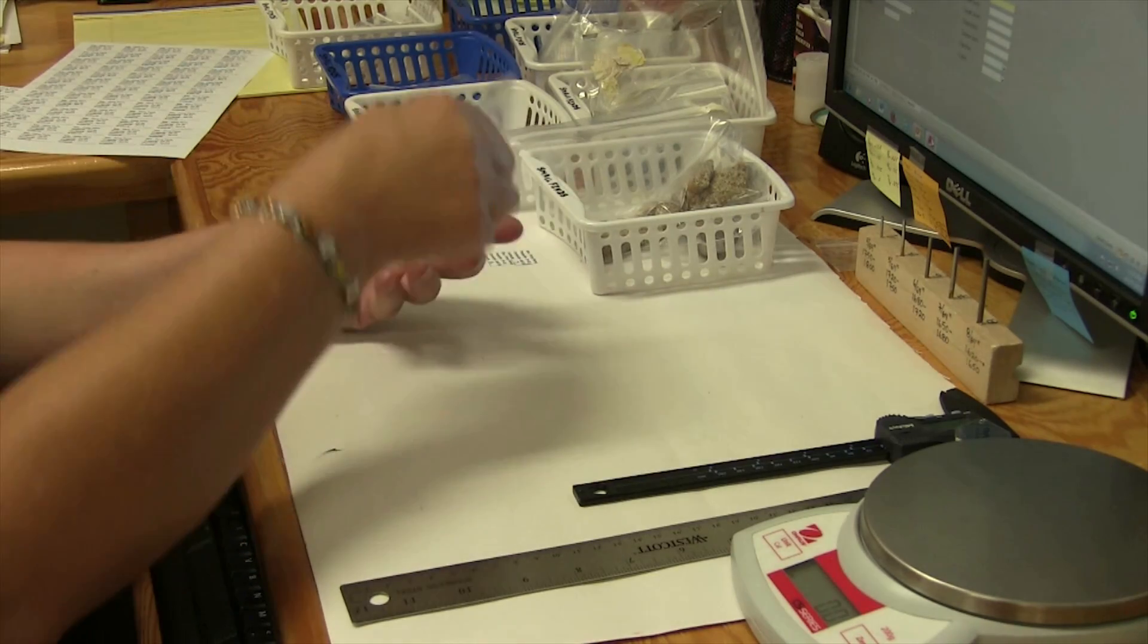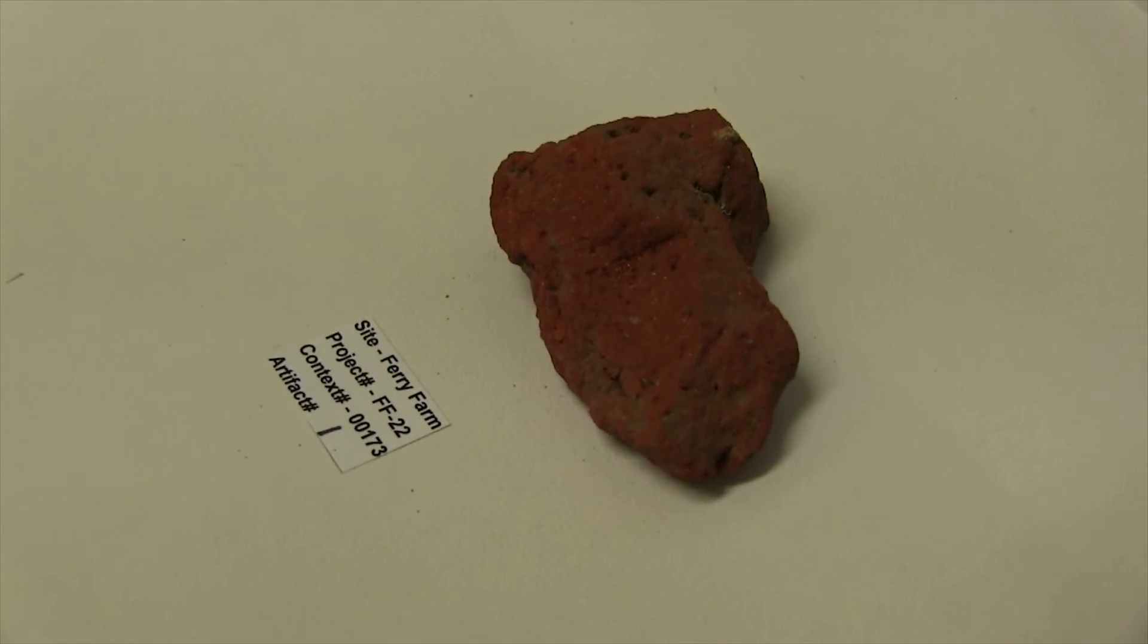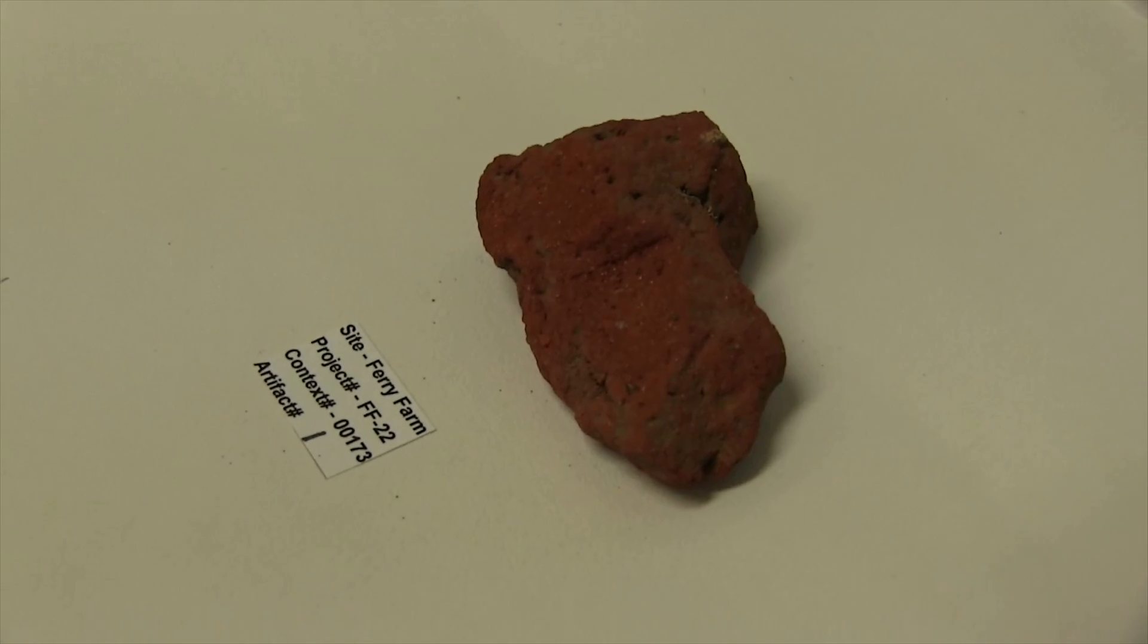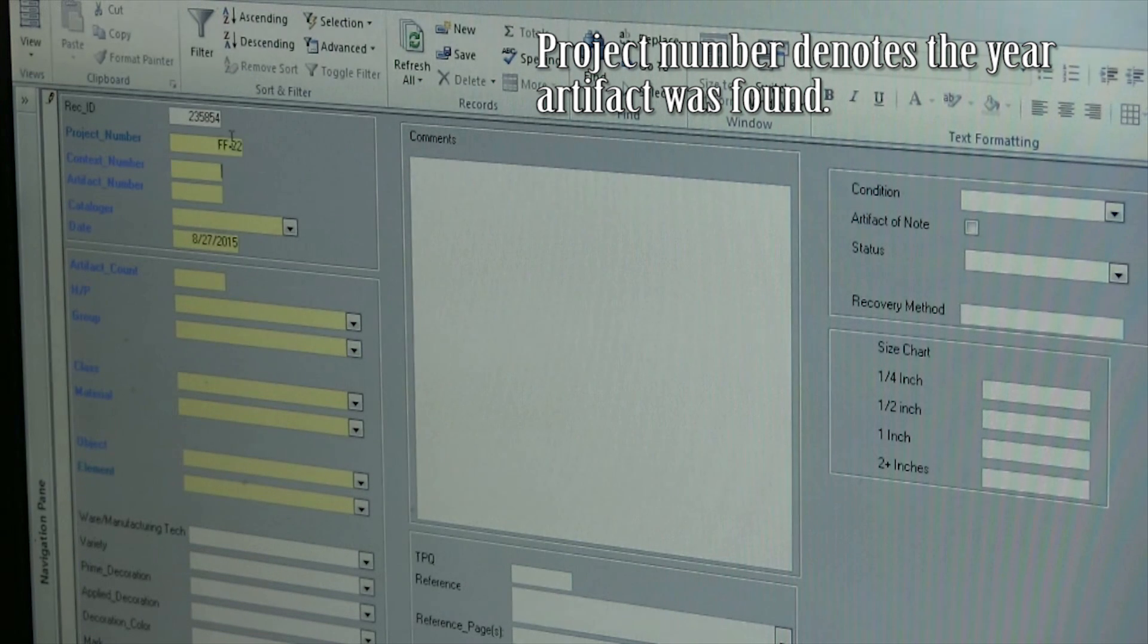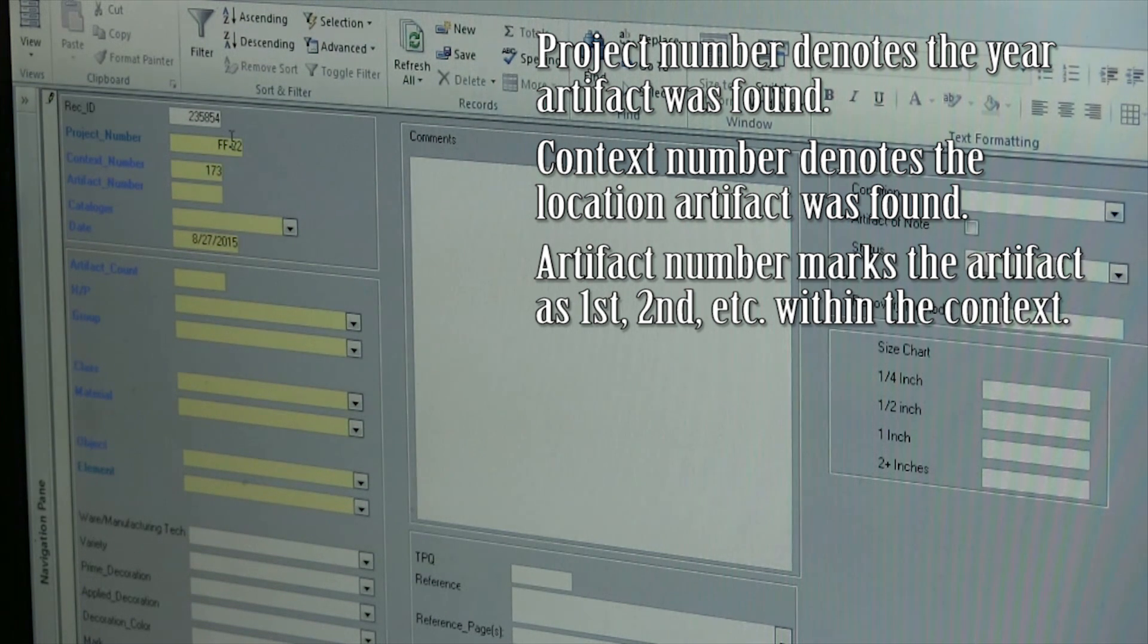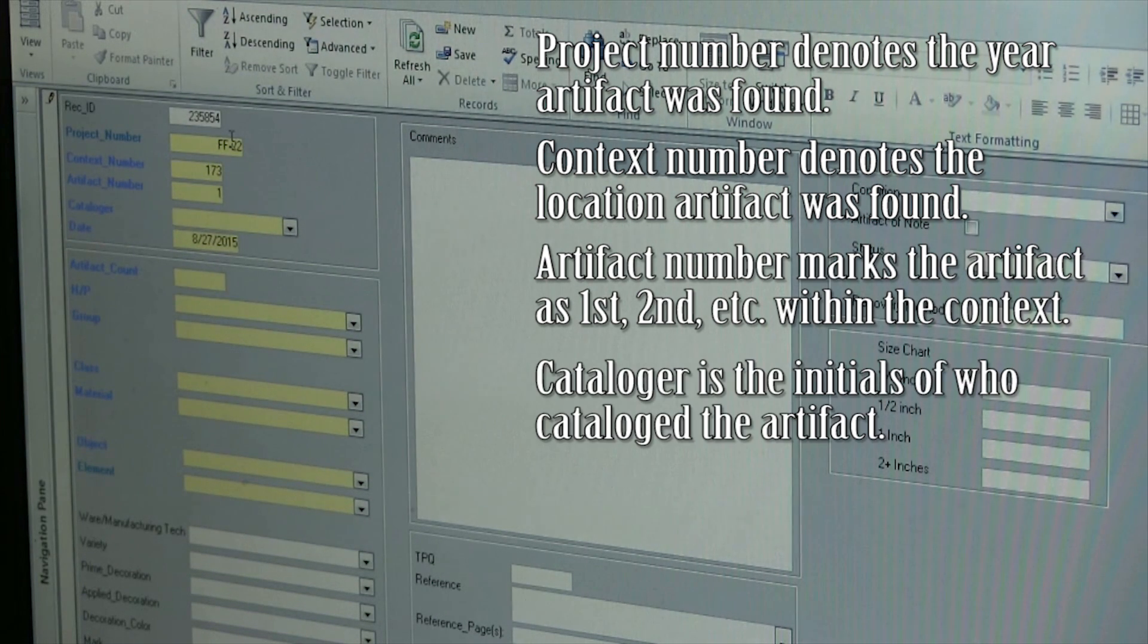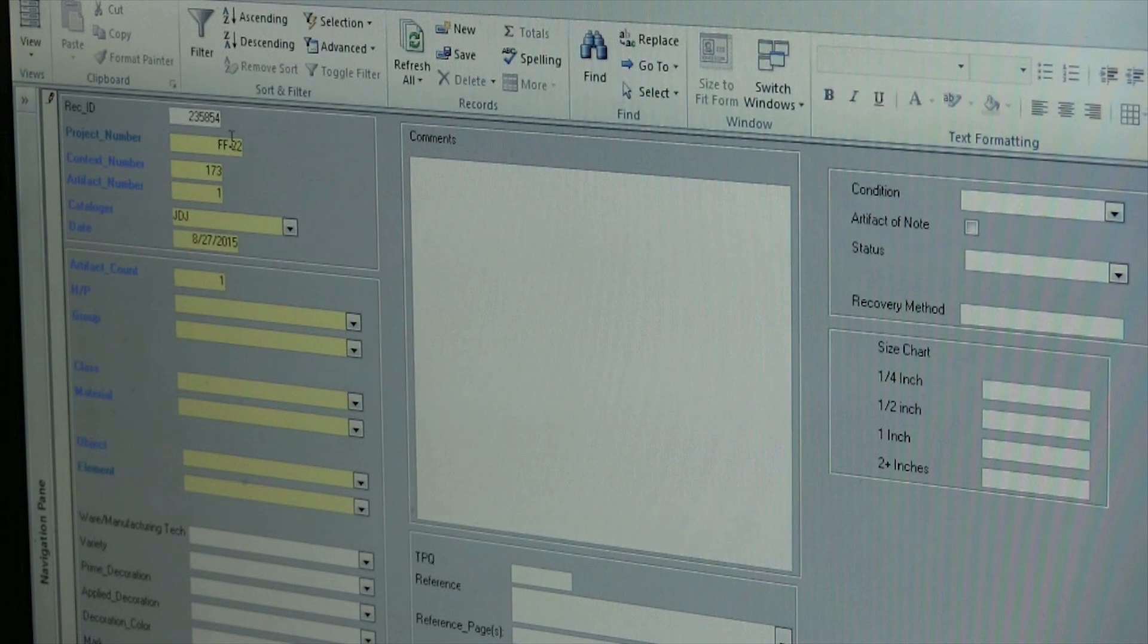So we're going to do the first artifact and it happens to be a piece of brick. I'm going to describe this brick in our database. There's some beginning information that you have to put in. You have to put in the project number, which is FF22, the context number, and this context number is 173. It is artifact number 1. The cataloger is myself, so I put in my initials. The artifact count, there's one brick, so I put in one. If there was two, I'd put in two.